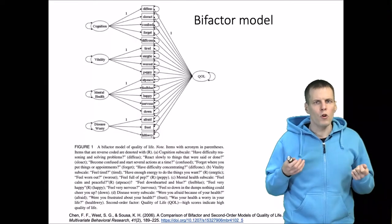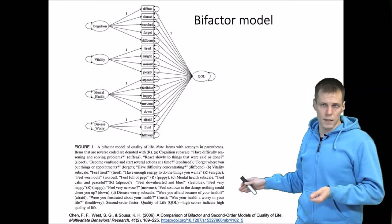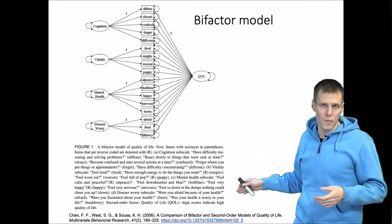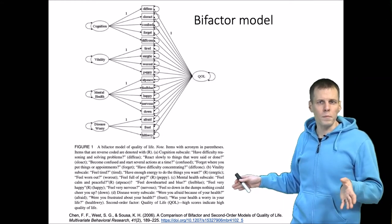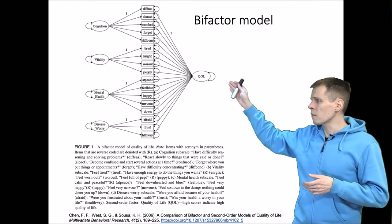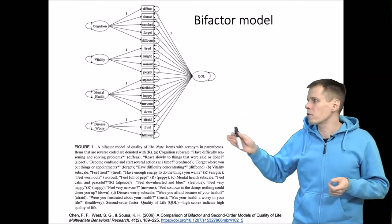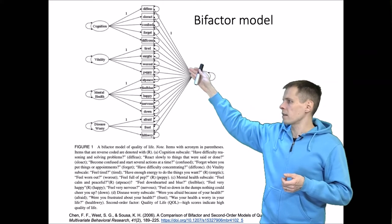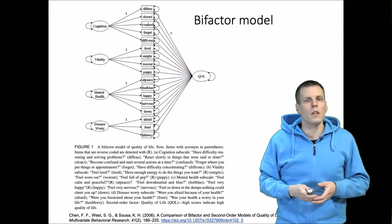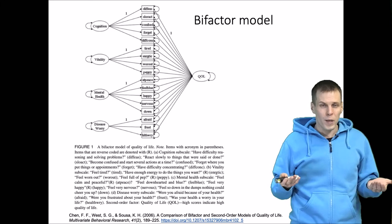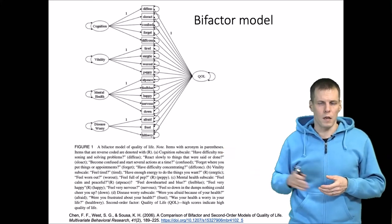If you want to learn more about bifactor models, the article by Chen is perhaps the best source. Their example model has quality of life as a general factor and four minor factors: cognition, vitality, mental health, and worry. This appears to be applied to elderly populations and is very commonly used in this domain.